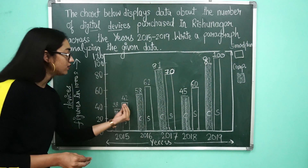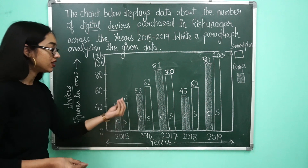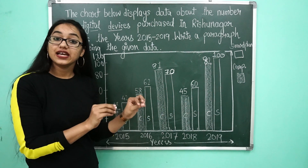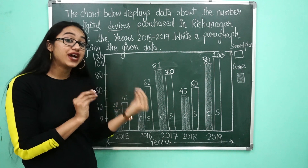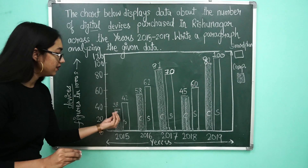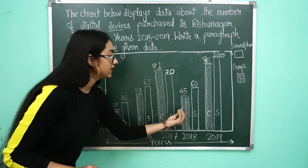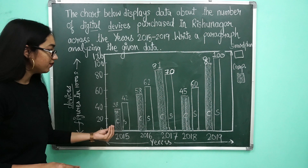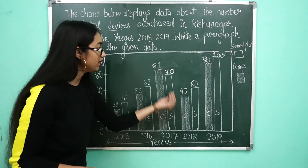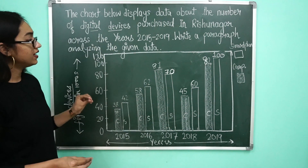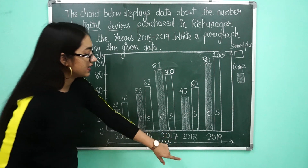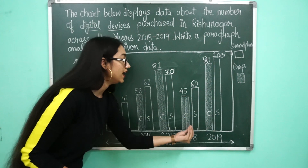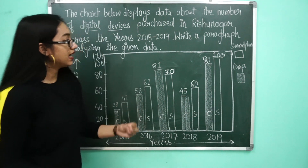फिर मैं बता दूँगी कि कौन से year में कितनी sales रही। कुछ vocabulary words भी use करेंगे — जैसे computer की sales 38, 58, 81 पे थी और एकदम से गिरके 45 पे हो गई, तो यहाँ 'steep fall' लिखेंगे: 'Computer की sales में 2018 में एक steep fall देखी गई।' और 2019 में smartphone 60 से 100 पे चला गया, तो: 'The sales of smartphones skyrocketed in the year 2019.'